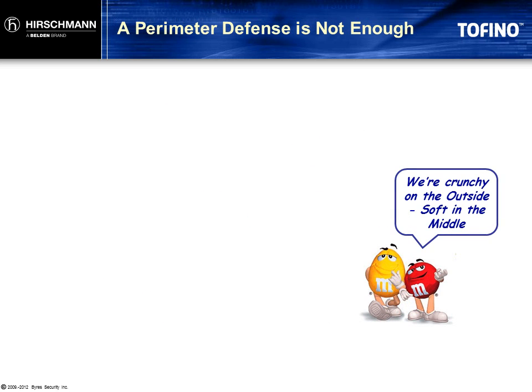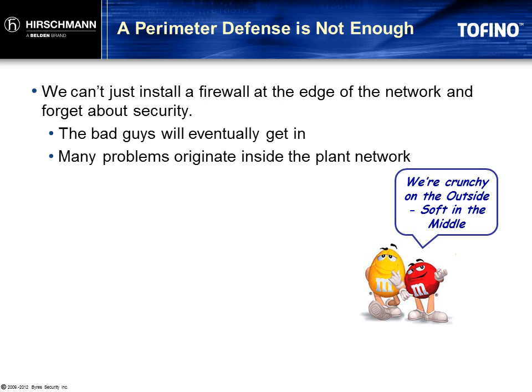Protection at the perimeter of the network is just not effective against the many security threats that can impact our plant. There are many pathways of entry that can completely bypass the known perimeter, and many of the threats originate inside the plant network. We need security solutions that will harden the plant so it can continue to operate safely and productively even in the face of cybersecurity incidents. In the next video in this series, we'll talk about security strategies that work on the plant floor.